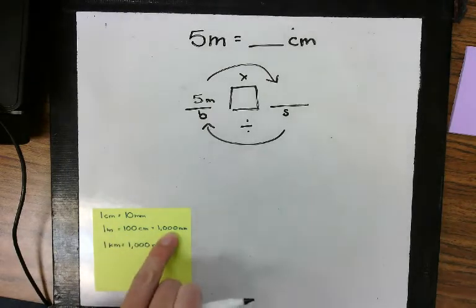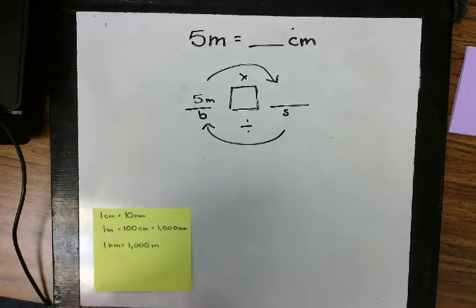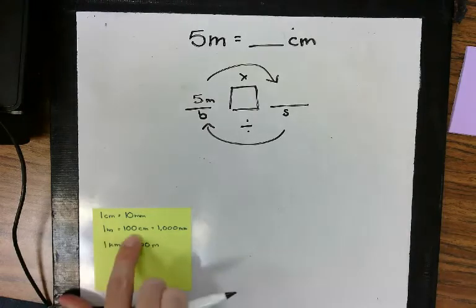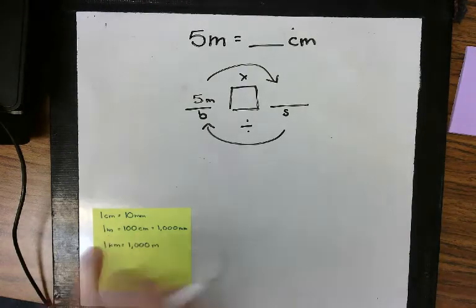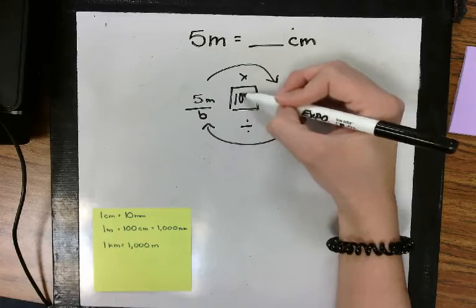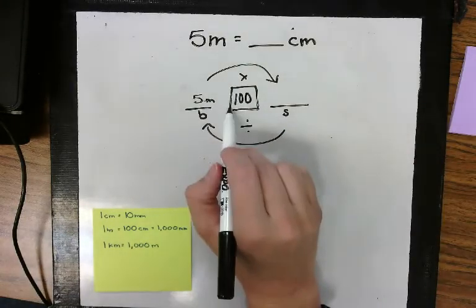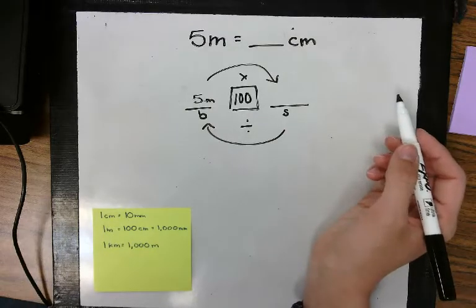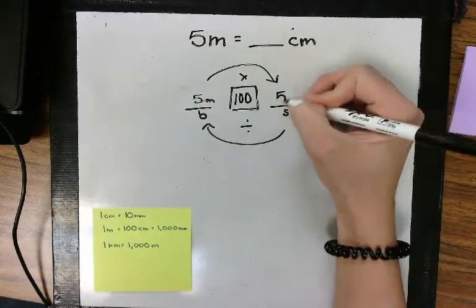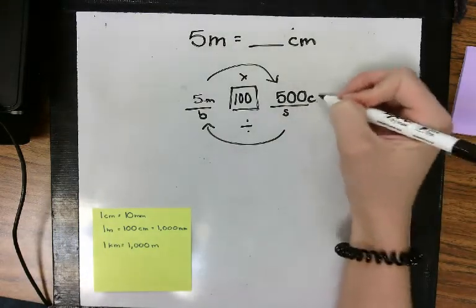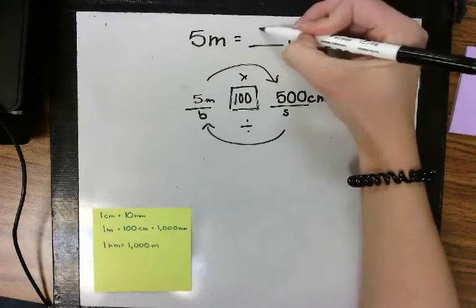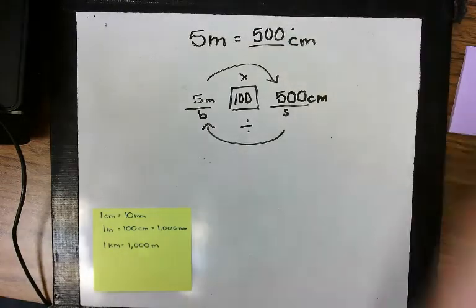Meters are bigger than centimeters, so I know I'm starting here with 5 meters. How many centimeters are in a meter? We can use our conversion chart. We know there's 100 centimeters in a meter. So our basic unit is 100. This tells me I do 5 times 100, which is going to be 500. So that tells me there are 500 centimeters in 5 meters.